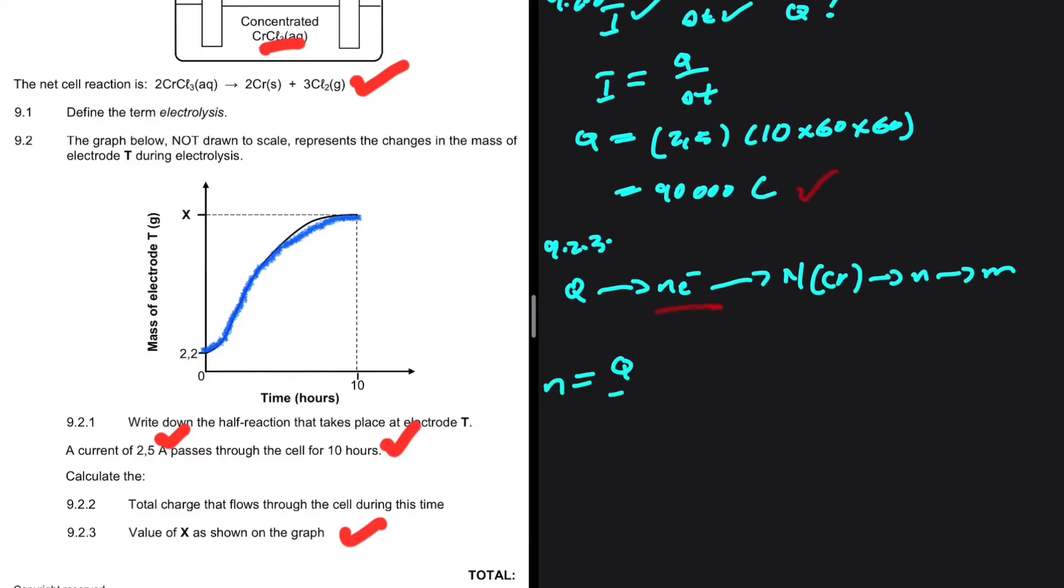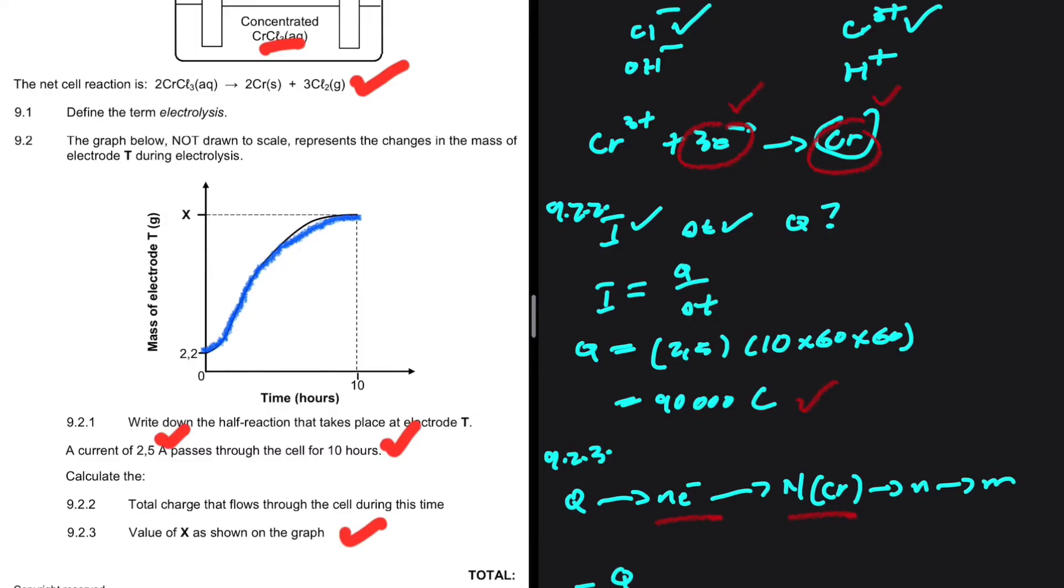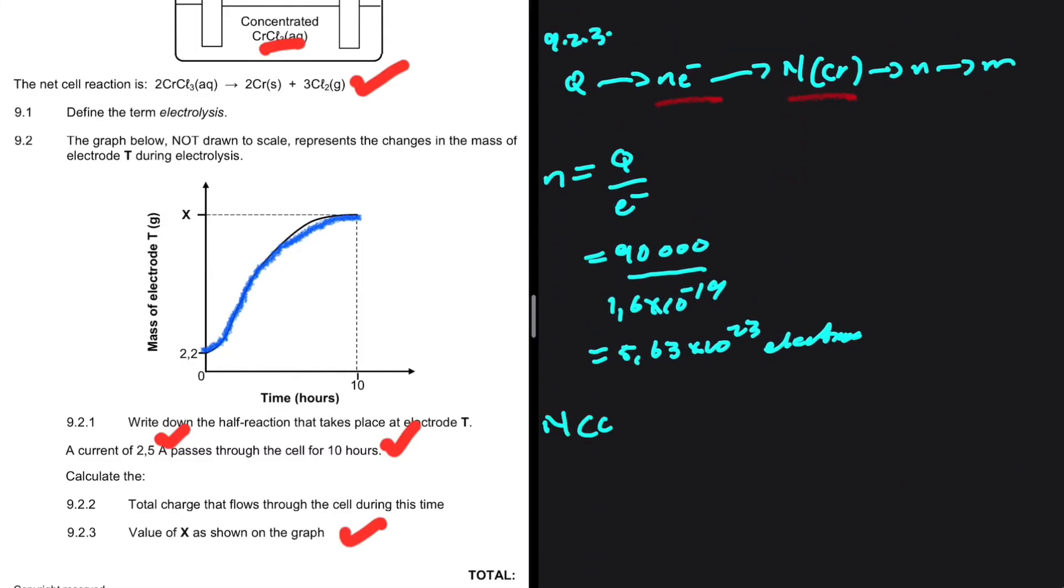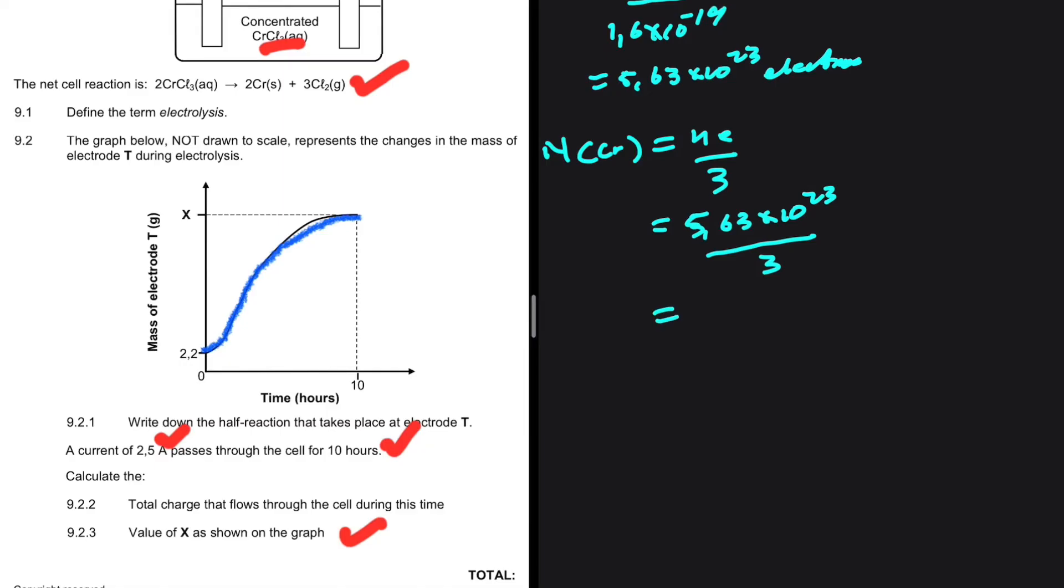The number of electrons is equal to the charge divided by the charge of an electron. This will give us 90,000, which is the charge we determined above, divided by 1.6 times 10 to the minus 19. That is equal to 5.63 times 10 to the power of 23 electrons. Let's use it to find the number of atoms of chromium. Well, 3 electrons will give us 1 atom of chromium. So, we can say that the number of atoms of chromium is equal to the number of electrons divided by 3. We're going to have 5.63 times 10 to the power of 23 divided by 3. If you put that in your calculator, you're going to get 1.88 times 10 to the power of 23 as the number of atoms of chromium.